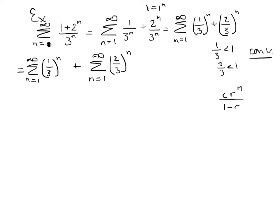And that's where M is where it starts, so in our case, 1. So for this first one, C is 1, there's no number out in front. R is 1 third. Capital M is 1, the sum starts at 1. 1 divided by 1 minus R, 1 minus 1 third. I'll have to add to that. C in this second one is 1. R is 2 thirds. M is 1, that's where the sum starts. And then I've got 1 minus 2 thirds.